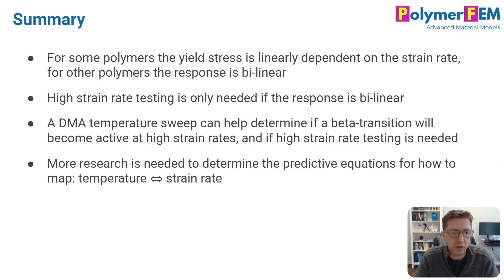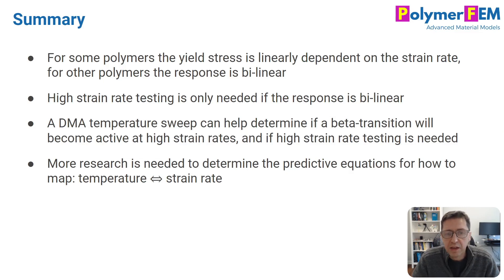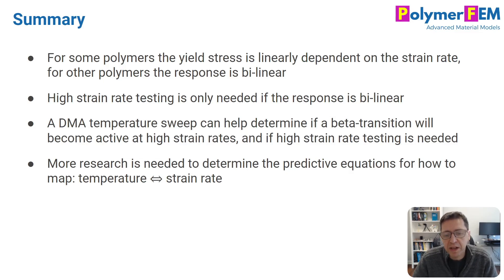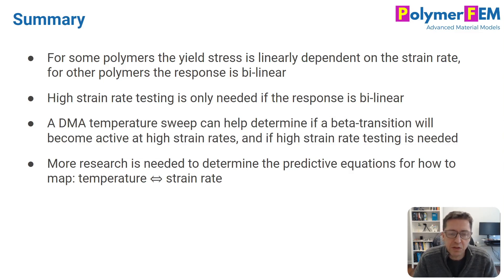To summarize: for some polymers the yield stress is linearly dependent on strain rate; for others it's bilinear. If linear, you can do just two low strain rate tests and predict the full range. DMA temperature sweeps are very useful — by looking for beta transitions in the loss modulus, you can predict whether a bilinear response is likely. Further research into the equations and mechanisms for converting between temperature and strain rate — perhaps using the WLF equation — would be a great topic to explore.